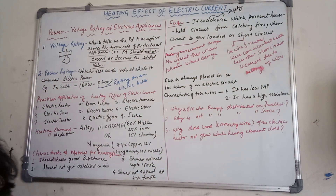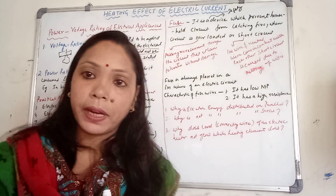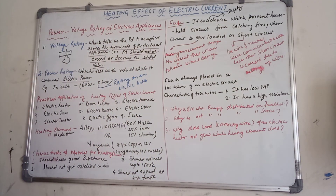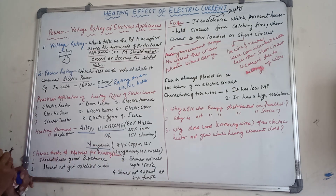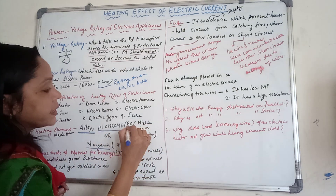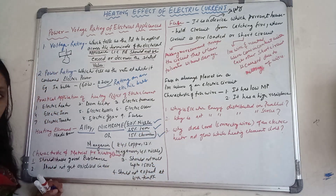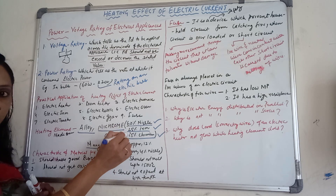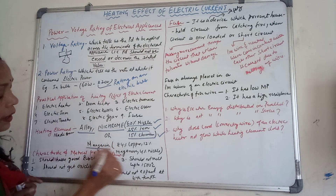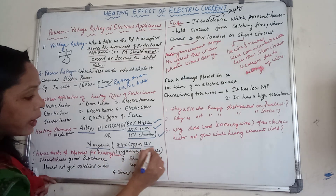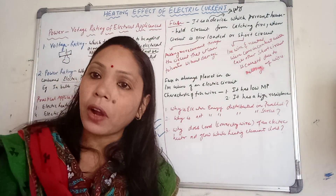The heating element is made from an alloy — it is not a pure element, it is a combination of elements called an alloy. The name of the alloys are nichrome and manganine. Nichrome wire has 60% nickel, 25% iron, and 15% chromium. In manganine: 84% copper, 12% manganese, and 4% nickel. Please learn these percentages.